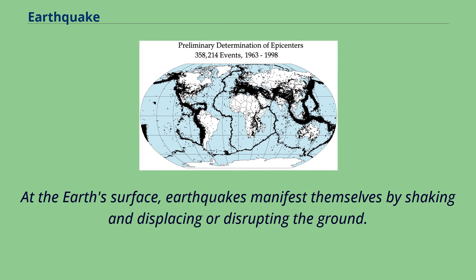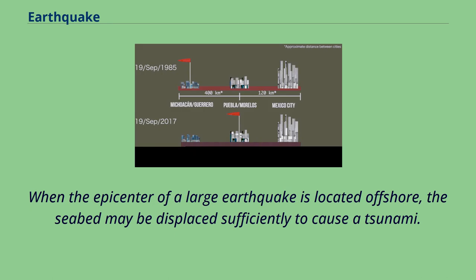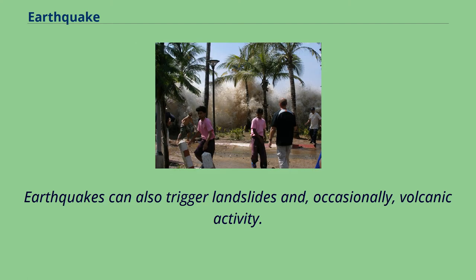At the earth's surface, earthquakes manifest themselves by shaking and displacing or disrupting the ground. When the epicenter of a large earthquake is located offshore, the seabed may be displaced sufficiently to cause a tsunami. Earthquakes can also trigger landslides and, occasionally, volcanic activity.